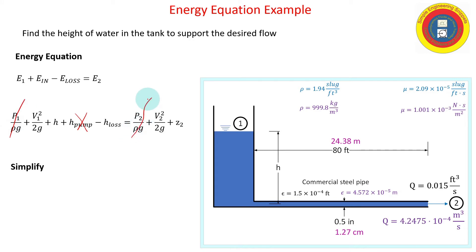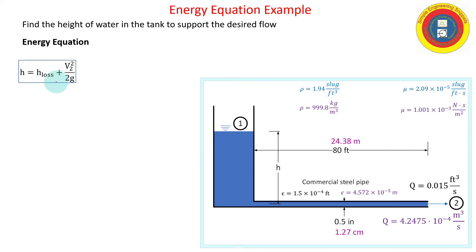So let's continue to simplify. p1 and p2 cancel each other out, they're both atmospheric so we could say they're zero. Large tank assumption, so again the velocity in the tank is negligible, and we set our datum at point two so z2 is equal to zero. And there we have our equation. Solving for that, we have that our height or elevation in the tank is equal to our head loss plus the velocity head.